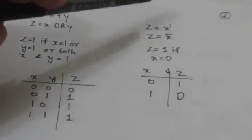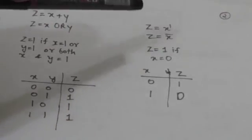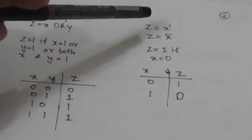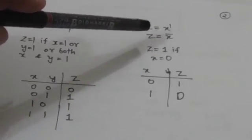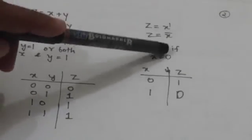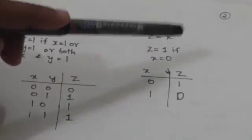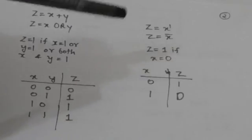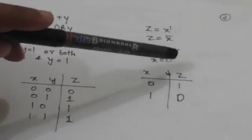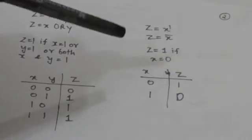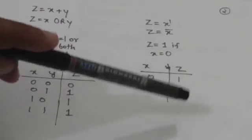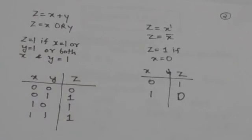The last operation is the NOT operation. It will be read as z equals to x prime. The value of z will be 1 if x equals 0. Value of z is 0 if the value of x is 1.